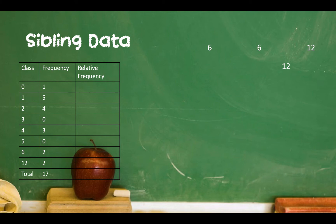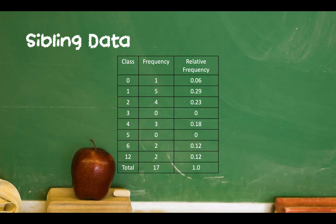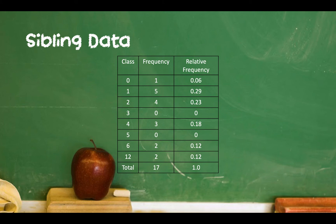To construct the relative frequency, we take the frequency for each bin and divide by the grand total of 17. So 1 divided by 17 gives 0.06; 5 divided by 17 gives 0.29; 4 divided by 17 gives 0.23, and so forth. All those relative frequencies add up to 1. Note that sometimes the total may come out to 0.99 or 1.01 — that is due to roundoff error when rounding individual relative frequencies.